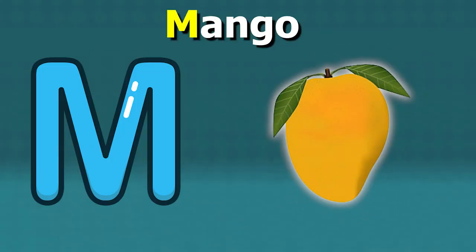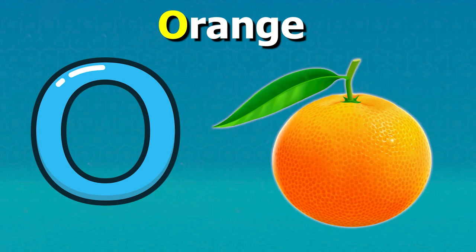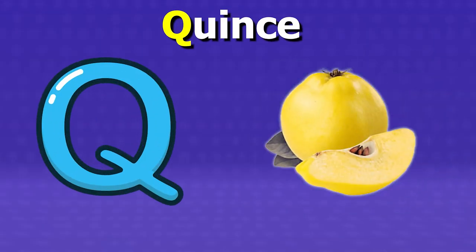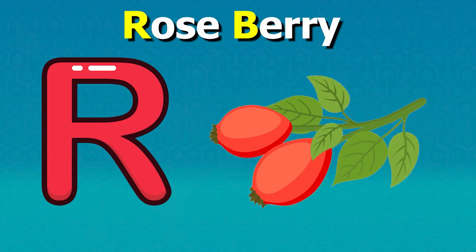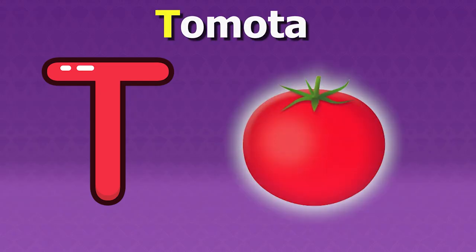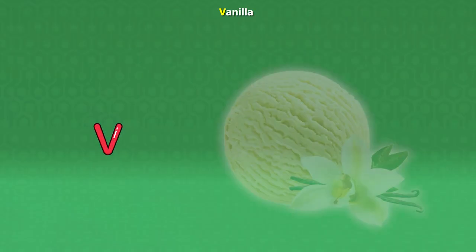M for Mangoes, N for Nashi, O for Oranges, P for Pears, Q for Quinces, R for Raspberries, S for Strawberries, T for Tomato, U for Ugly Fruit.